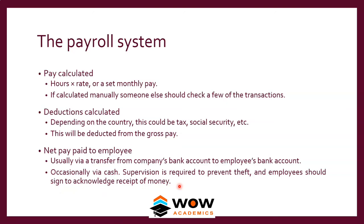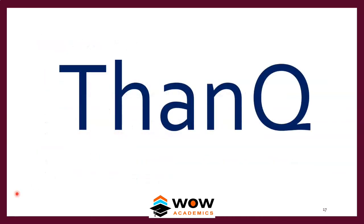Bank transfer provides proof of how much the employee received and how much the company transferred. If payment is made in cash, supervision is required to prevent theft, and employees should sign an acknowledgement of receipt. That is how a payroll system operates. As an exercise, the next time you buy something from Amazon, check the invoice and notice the details — every company has a process for sales, purchases, and payroll, ensuring that work flows smoothly.